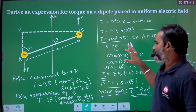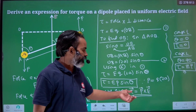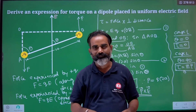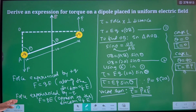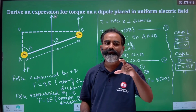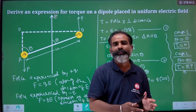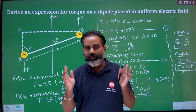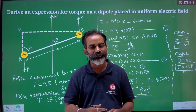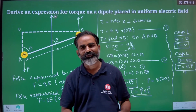So the derivation is clear — F equals qE and everything. The torque in vector form is p cross E. The direction of torque is perpendicular to the plane containing p and E. This derivation and video are available on YouTube. Check the playlist for loads of free content. The app also has free and paid versions available. Take care, bye bye.